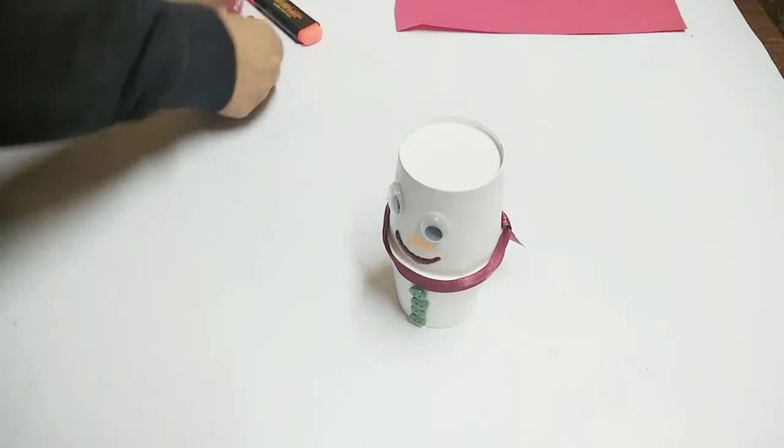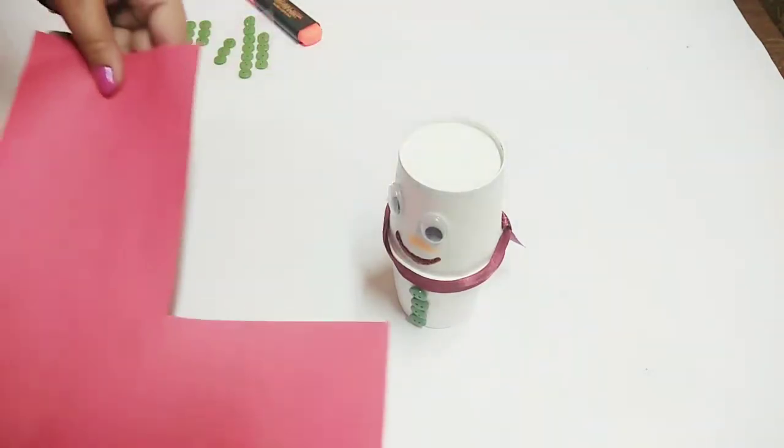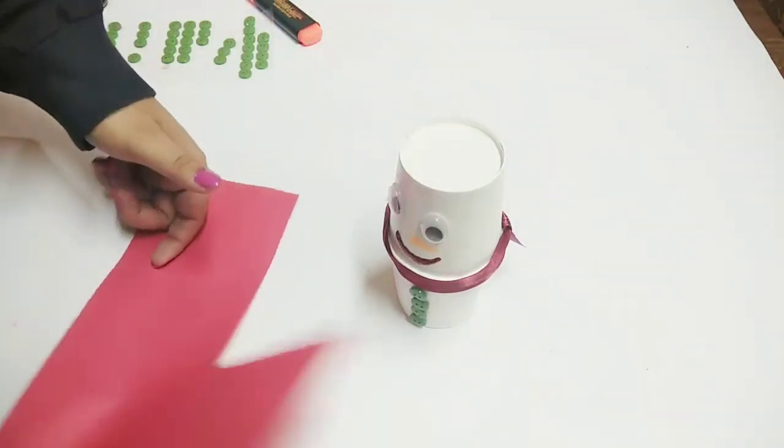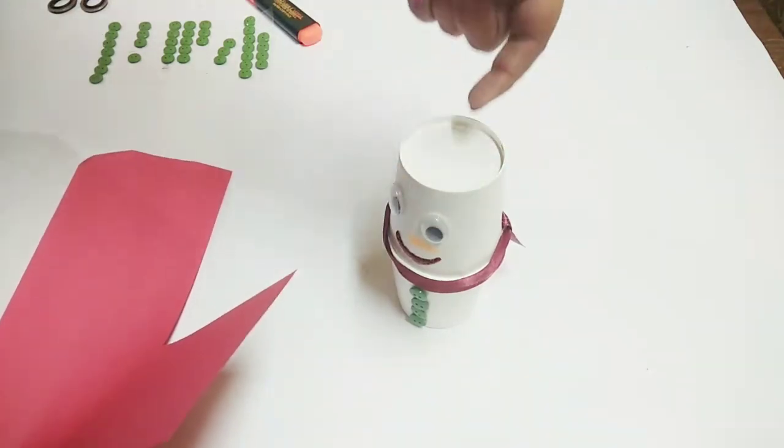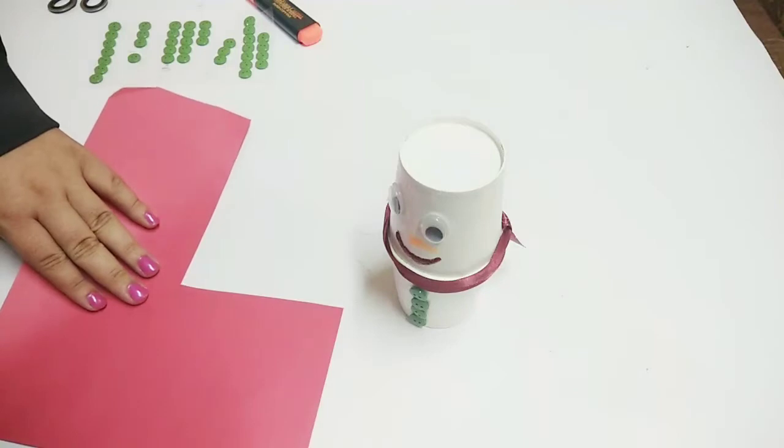And finally we will make this cap using any red color sheet. We will fold it in a cone shape and then we will stick it over this. You have to keep it properly fit, so let's make the cone.